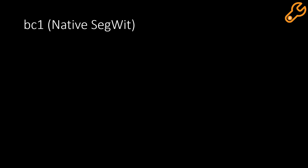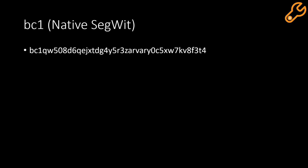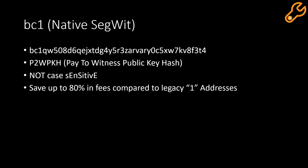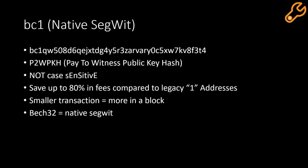Finally, we've got the bc1 or native SegWit address, which looks a little like this — starts with a lowercase bc, then the number one, then a whole lot of characters after that. Sometimes known as the P2WPKH or pay-to-witness-public-key-hash. Thankfully it's not case sensitive, so bc1q with a lowercase q or uppercase Q will go to the same destination. You can save up to 80% in fees when compared to the legacy one address, and because there's less transaction data you can fit even more transactions into a block. It is sometimes known as bech32 or native SegWit.